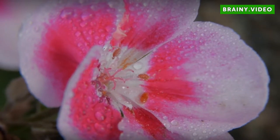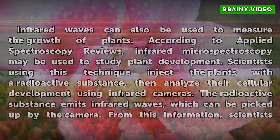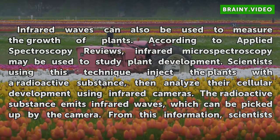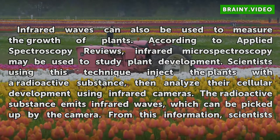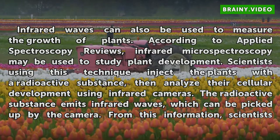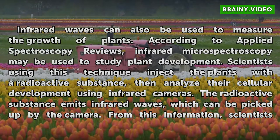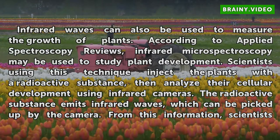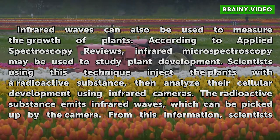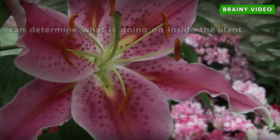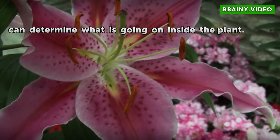Measurement: Infrared waves can also be used to measure the growth of plants. According to Applied Spectroscopy Reviews, infrared microspectroscopy may be used to study plant development. Scientists using this technique inject the plants with a radioactive substance, then analyze their cellular development using infrared cameras. The radioactive substance emits infrared waves, which can be picked up by the camera. From this information, scientists can determine what is going on inside the plant.